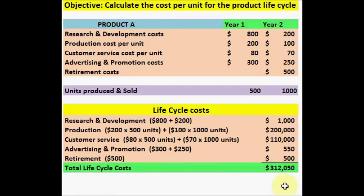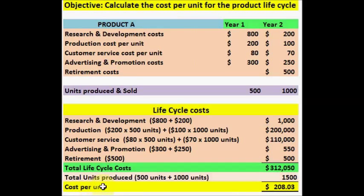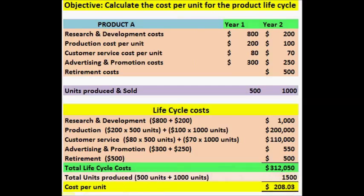So the total life cycle cost is 312,050, which is basically you add all the costs that we just calculated. The last step is to get the cost per unit, which can be calculated by taking the total life cycle cost of 312,050 and dividing it with the units produced. We produce 500 and 1000 units together, which is 1500 total units. So 312,050 divided by 1500 units gives a total cost per unit of 208.10 dollars.